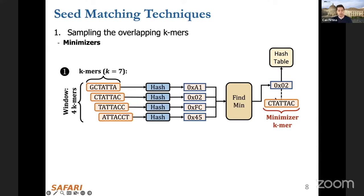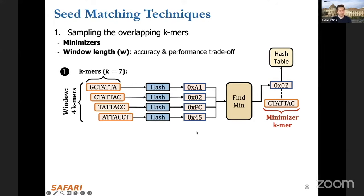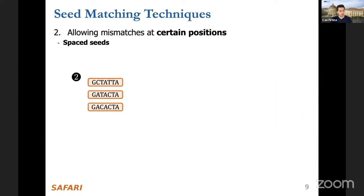The idea behind minimizers is that when two sequences are relatively similar to each other, the minimizers guarantee that we are going to pick the same minimizer k-mer, as long as we use the same hash function and the same parameters. Window length has a huge impact on accuracy and performance. Another seed matching technique is spaced seeds, where the goal is to allow mismatches at certain positions of these k-mers so that highly similar k-mers can still match each other even when they differ at specific positions.